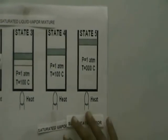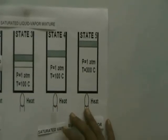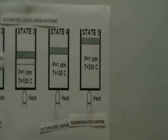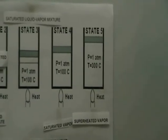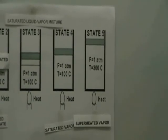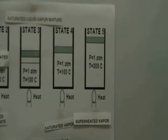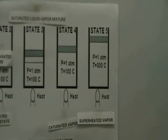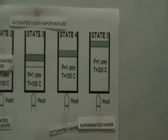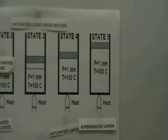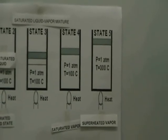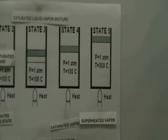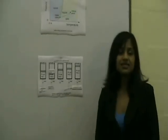Finally, I am going to explain what is saturation temperature and saturation pressure. At a given pressure, the temperature at which a substance starts boiling is referred to as a saturation temperature. Likewise, at a given temperature, the pressure at which a pure substance starts boiling is called a saturation pressure. This concludes the end of our presentation for tutorial 2, question 1, based on PVT relationship.